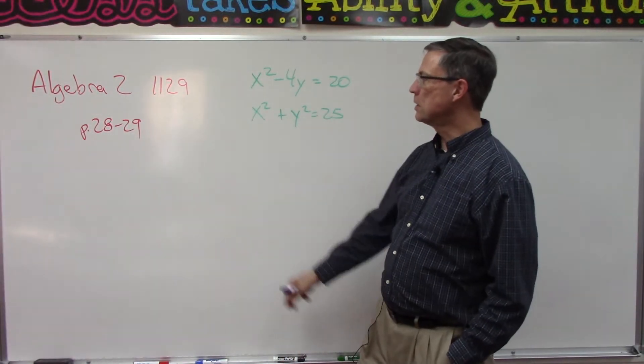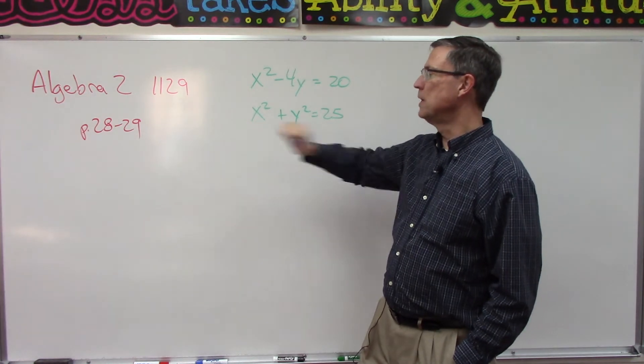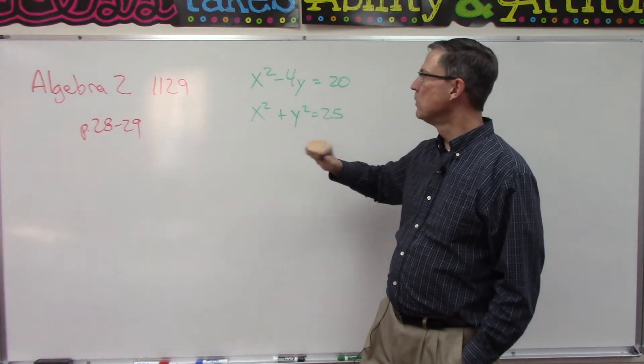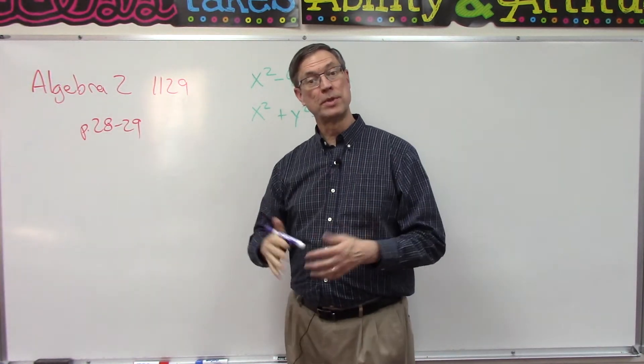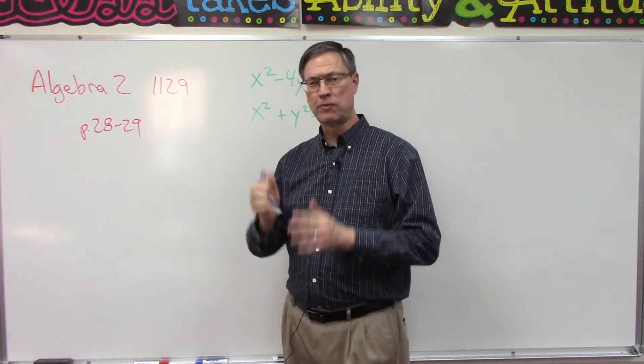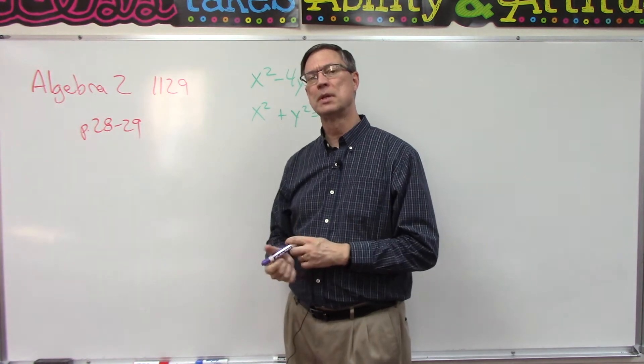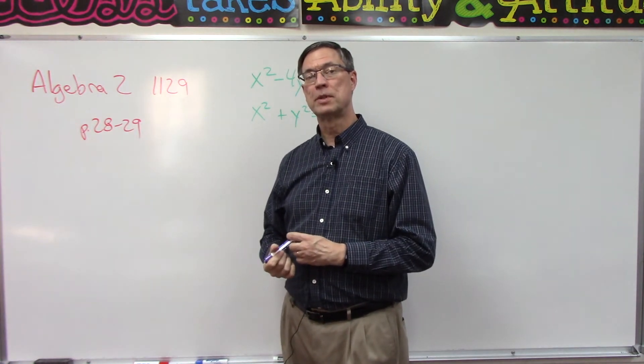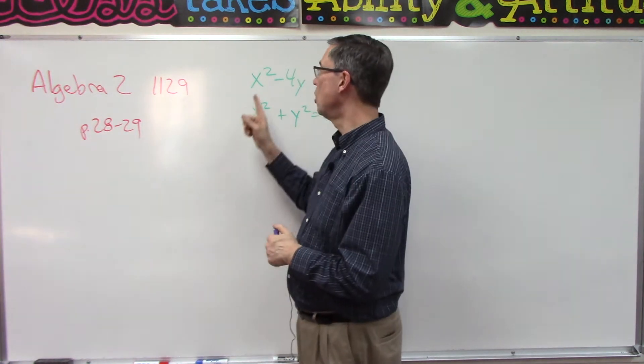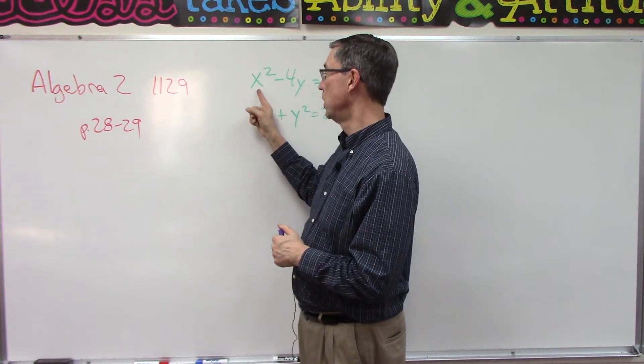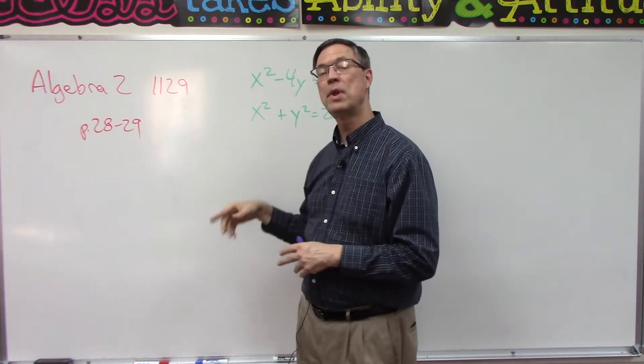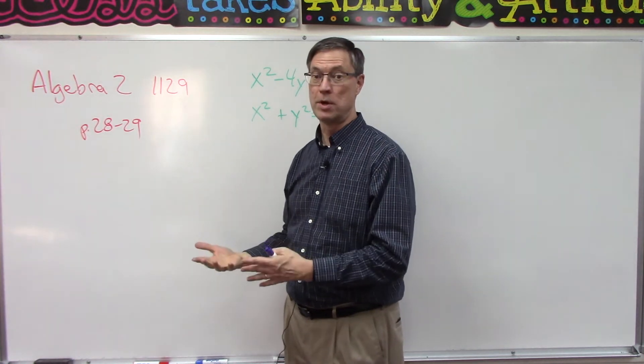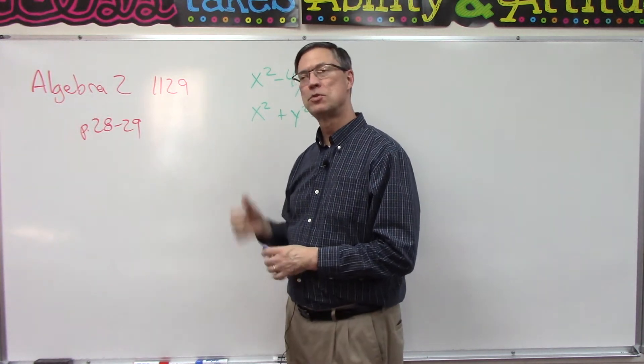All right, this is the last concept on pages 28 and 29. You're almost done. There are two examples that you really ought to read over and follow all the steps. Notice how they're doing it. One method is called substitution, so you solve for like x squared and then you take what you get and you plug it into the second equation in place of x squared.